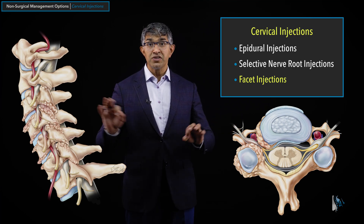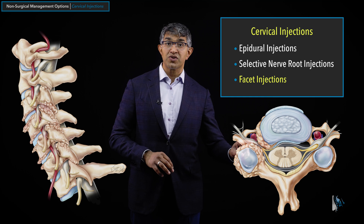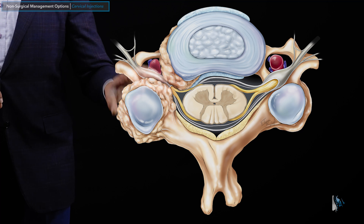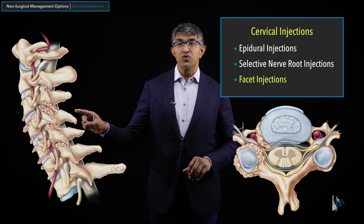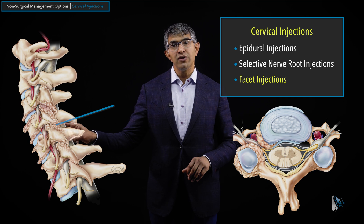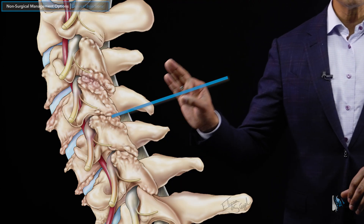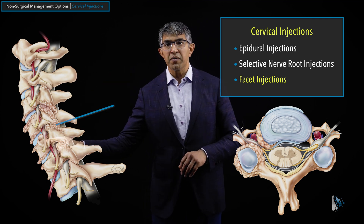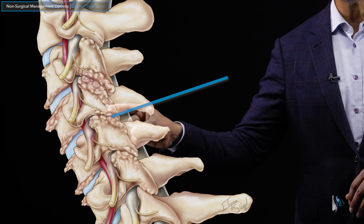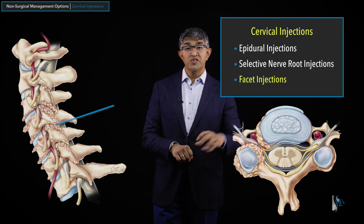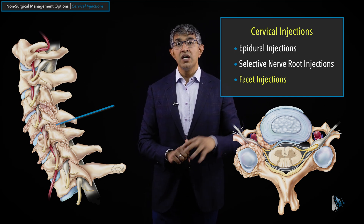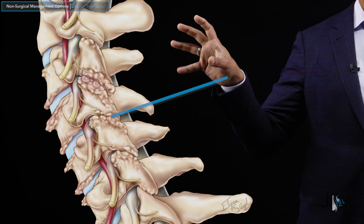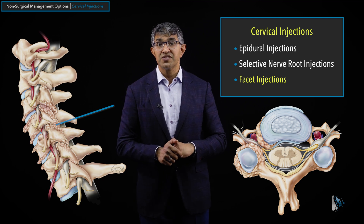The epidural or selective nerve root injection targets the neurological structures — the nerve itself on one or both sides. The facet injection targets the bony structure — the joint itself, or the facet joint. A needle coming in from the back would target this area specifically. Most of the time, what they're really targeting is a little branch called the medial nerve — a twig that comes off the side and innervates the joint. When they do a medial branch block, they're trying to block that nerve to cool off symptoms coming from arthritis in the neck.